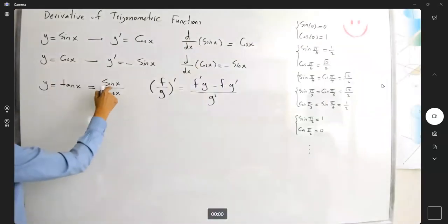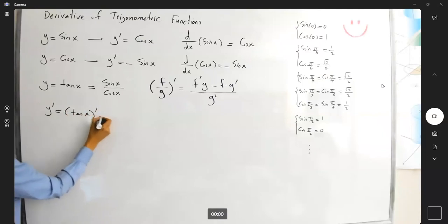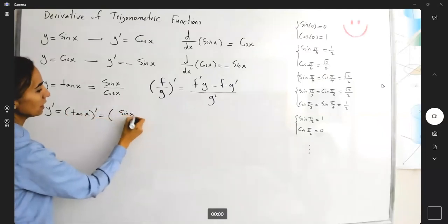So your f is sine, your g is cosine. So the derivative of tangent of x is the derivative of sine x over cosine x.